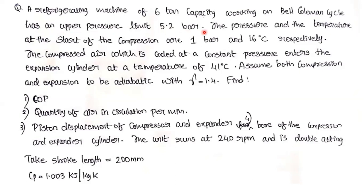The pressure and temperature at the start of compression are 1 bar and 16°C respectively. The compressed air, cooled at constant pressure, enters the expansion cylinder at a temperature of 41°C. Assume both compression and expansion to be adiabatic with gamma equals 1.4. We have to find: (1) COP, (2) quantity of air in circulation per minute, (3) piston displacement of compressor and expander.